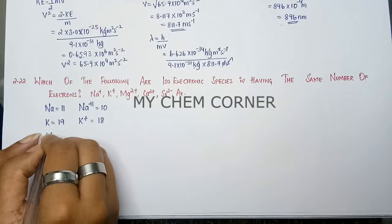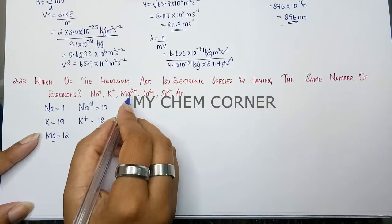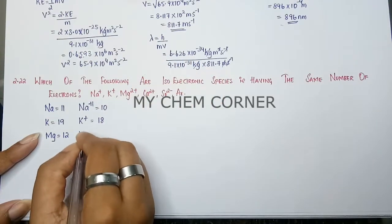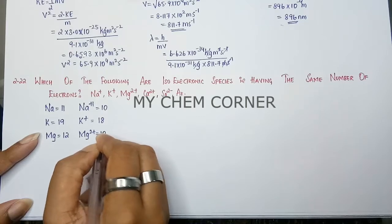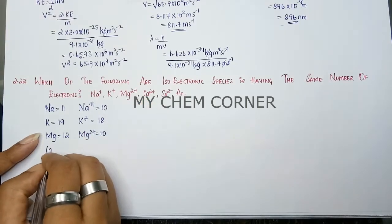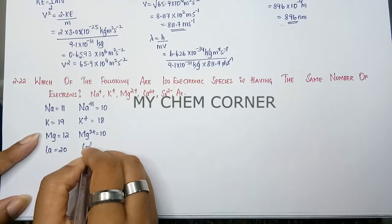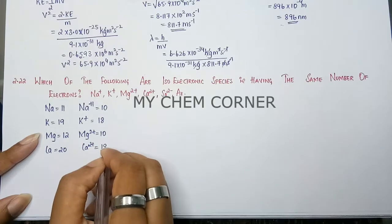Next is magnesium. Atomic number of magnesium is 12. But the state given is Mg2+, which means loss of 2 electrons. So Mg2+ will be 10. Next is calcium, atomic number 20. Calcium is present in the +2 oxidation state, meaning removal of 2 electrons, therefore 18.